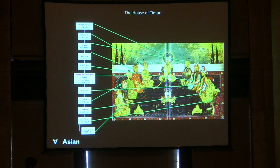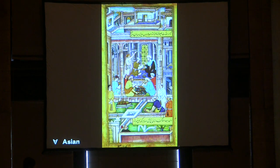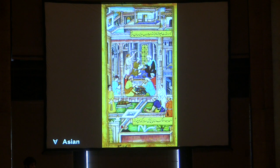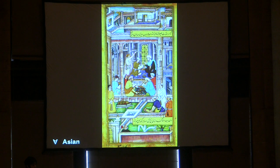Every so often you find Timur depicted as sort of Indian, sort of Persian, somewhere in between — visually forging the relationship that the world of greater Iran of the Timurids is not that far from the world of India of the Mughals. Note also the Chinese blue and white vases. The Mughals maintained many different ways of legitimation, connecting with the past while creating a new worldview for the present.